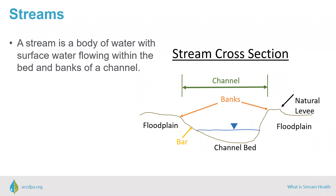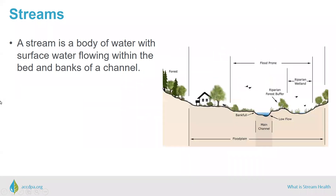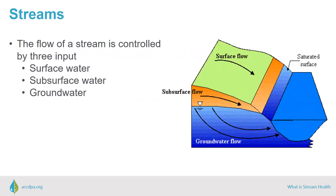The low-lying area on each side of the stream represents the floodplain, and it stretches from the banks of the river to the edges of the valley. The floodplain can also be called the riparian area, as seen here. The amount of water or stream flow is controlled by three inputs: surface water, subsurface water, and groundwater.